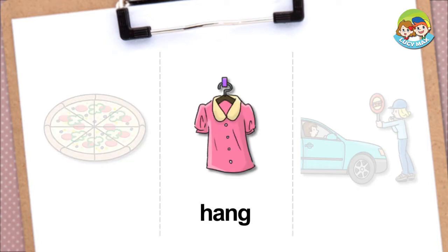Hang. If something hangs in a position, it doesn't fall to the ground. In the picture, a shirt hangs on a hook, so it doesn't fall to the ground.